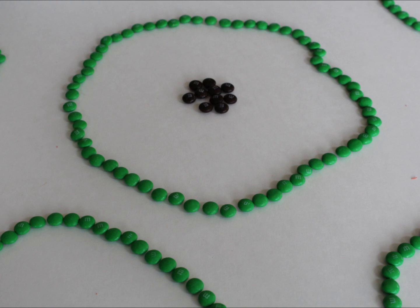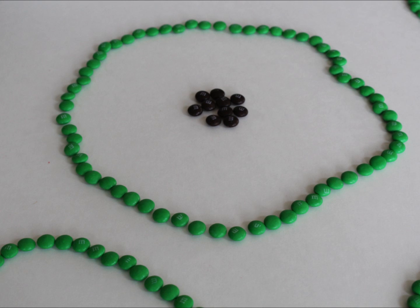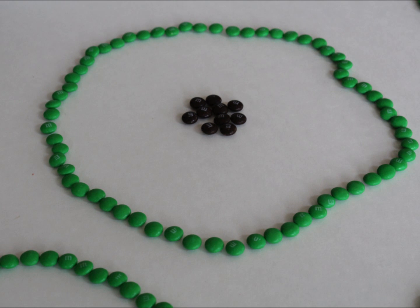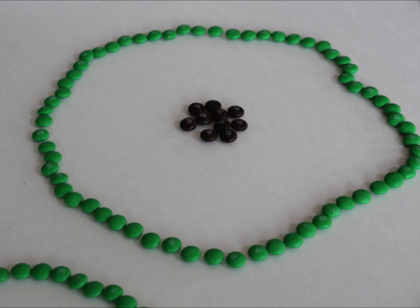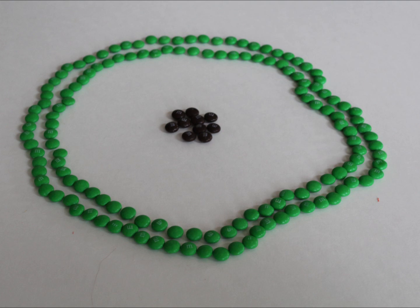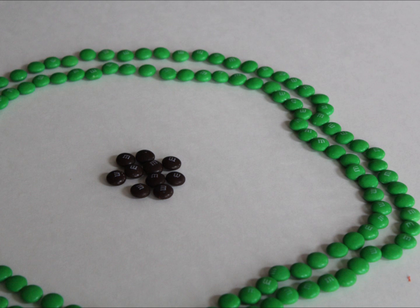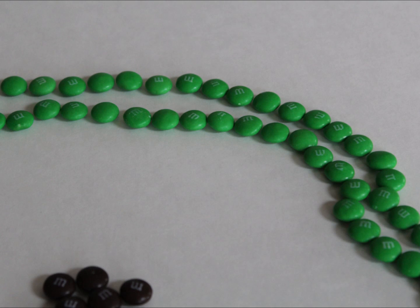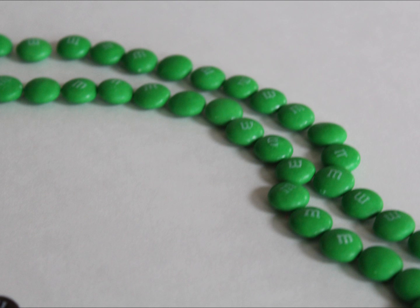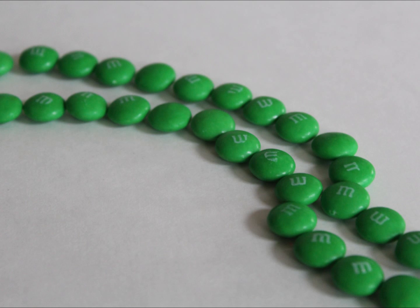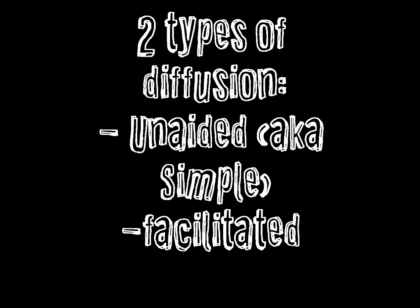Diffusion is the passive movement of particles from a region of high concentration to a region of low concentration as the result of the random movement of particles. There are two types of diffusion: unaided and facilitated.